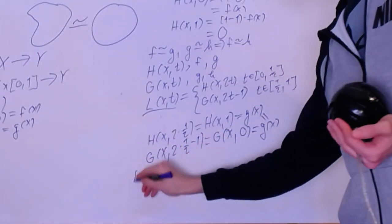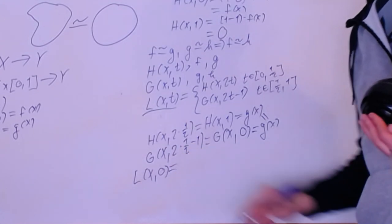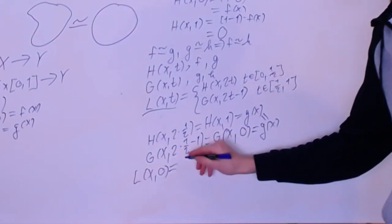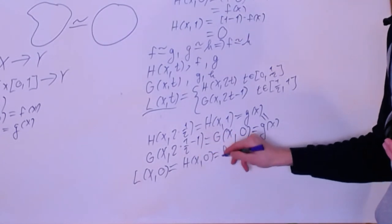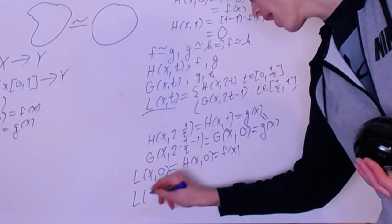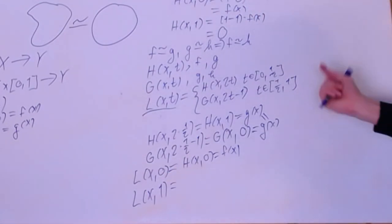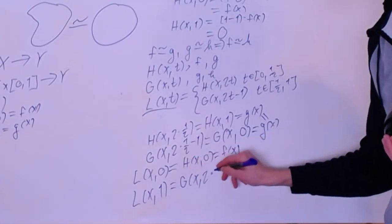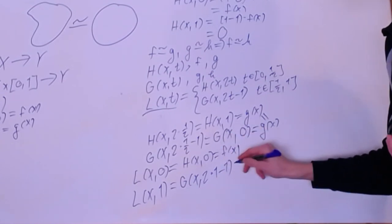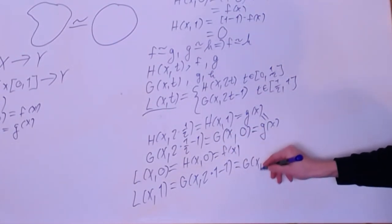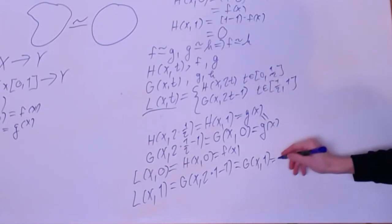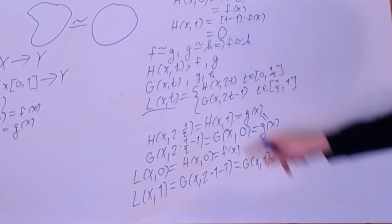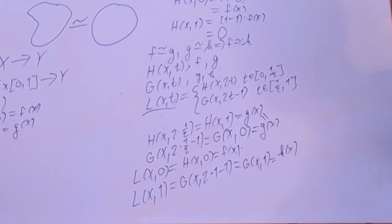Also note that L(x, 0) gives H(x, 0), which is clearly f(x) from the definition. And L(x, 1) — since 1 falls in the second piece — gives G(x, 2·1 − 1) = G(x, 1), which by definition equals h(x). So this is a homotopy from f to h, proving the transitivity of the homotopy relation.